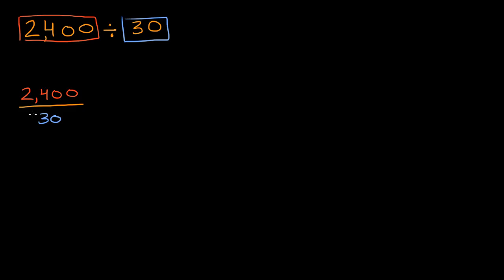This is just another way of saying 2,400 divided by 30. Now the reason why I wrote it this way is because you can write the numerator and the denominator as the product of some number and either 10 or 100 or 1,000. So 2,400, that's the same thing as 24 times 100, and then 30 you can view as three times 10.